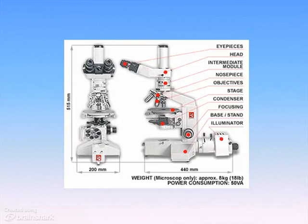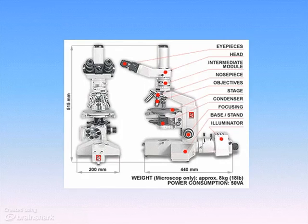This is a laboratory compound light microscope. It's a little more highfalutin than the type that we'll be using in class, but it has all the same parts as a typical compound light microscope. We'll spend some more time in the lab looking at this and going over each of the individual parts when we have one sitting in front of us.